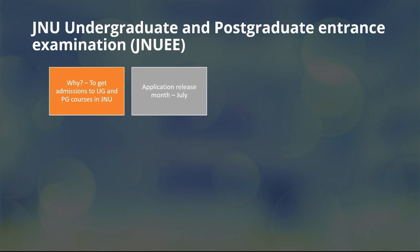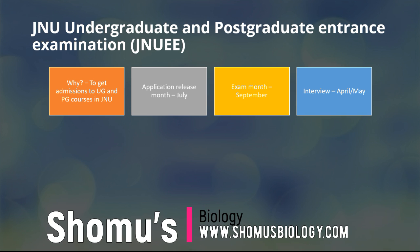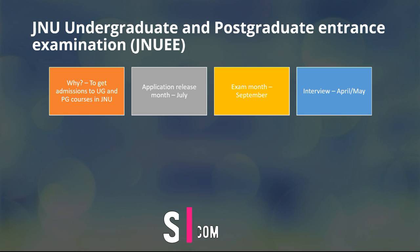Application release is normally from the month of July. Remember, after COVID, the time limit and the month have shifted a little from the original, so always check that. The exam month this time is September, and the interview will be in April or May. Normally if the exam is in September, the interview will be afterwards in October or November. But normally the exam used to be conducted in March, so the interview would go on in April and May.